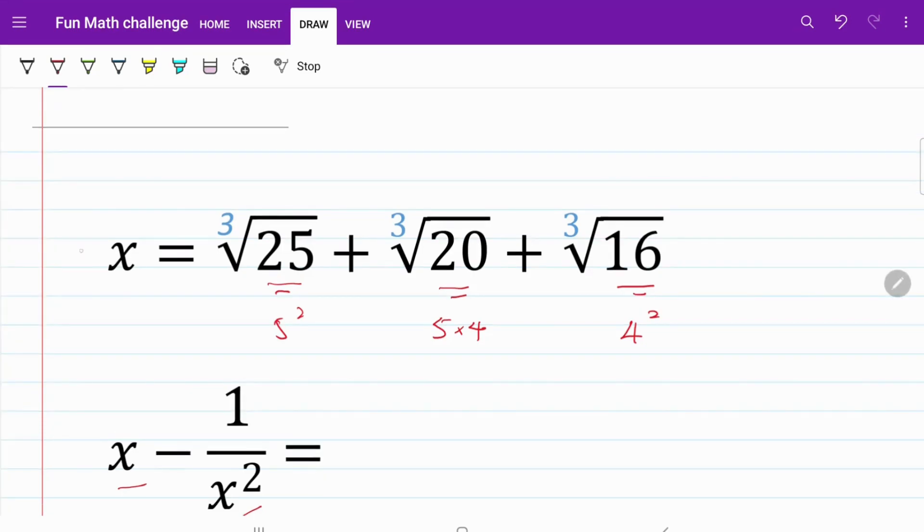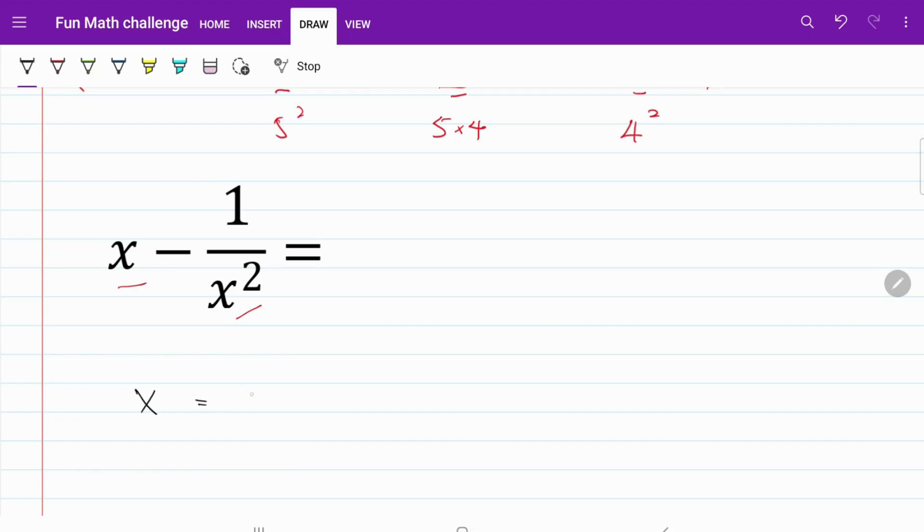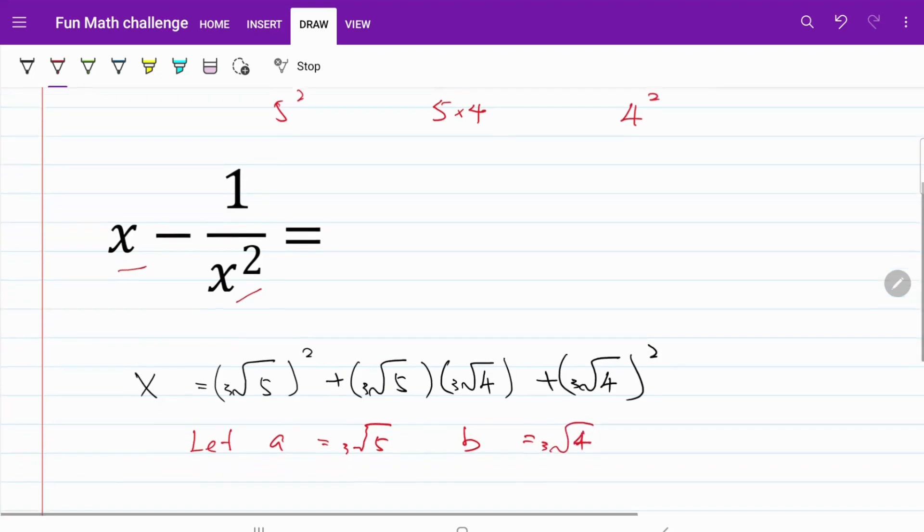I'm going to rewrite this equation using the new information. Now x equals cube root of 5 squared plus cube root of 5 multiplied by cube root of 4 plus cube root of 4 squared. We will use the substitution of letting a equals cube root of 5 and b equals cube root of 4. Then x becomes a squared plus ab plus b squared.